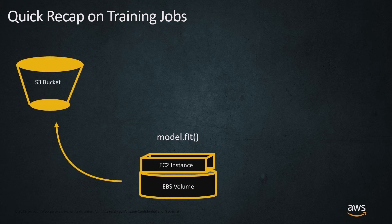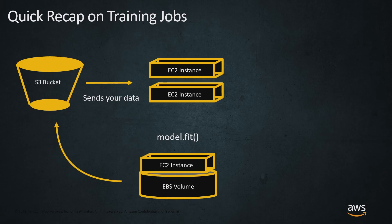When we call model.fit, SageMaker is going to shoot our data out to an S3 bucket — either we do this ourselves or SageMaker copies it over for us. After that, SageMaker is going to spin up additional EC2 instances. This is an ephemeral cluster dedicated to this specific model, and so this ephemeral cluster comes online.